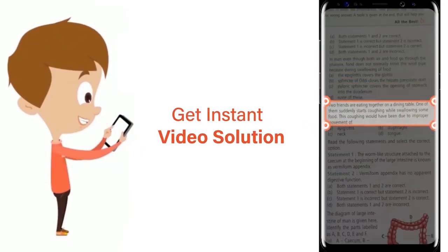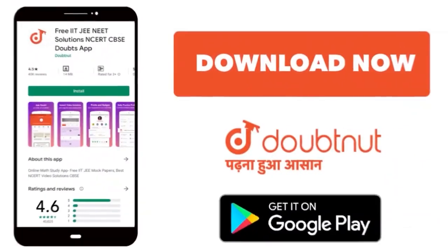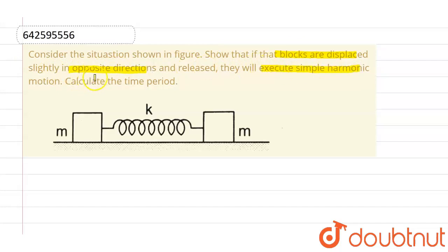The given question is: consider the situation shown in the figure. Show that if the blocks are displaced slightly in opposite directions and released, they will execute simple harmonic motion, and calculate the time period of the same motion.